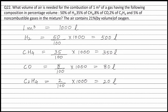The balanced equation for combustion of hydrogen is H2 + ½O2 → H2O. According to the balanced equation, 1 mole of H2 reacts with half a mole of oxygen to form 1 mole of H2O. Therefore, 500 liters of H2 will react with ½ × 500 = 250 liters of oxygen. Volume of oxygen required for combustion of hydrogen is 250 liters.